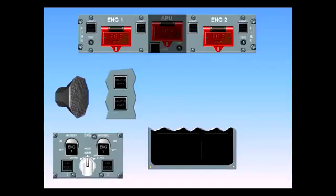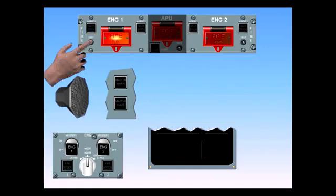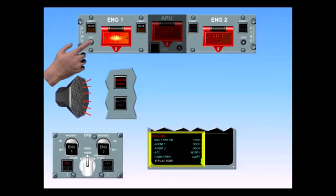Now perform the fire test for engine one. Push the engine one fire system push-button. Observe: the engine one fire push-button switch illuminates red, squib and discharge lights come on, the master warning light illuminates red, the CRC sounds, the engine one fire warning on the ECAM appears, and the fire light on the engine panel illuminates.